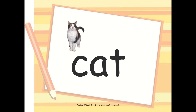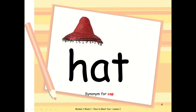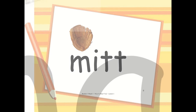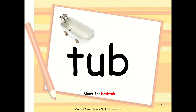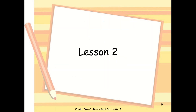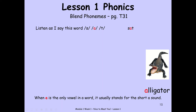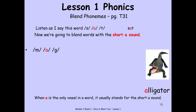For Lesson 1, you click on one and you're going to see the picture cards that come with the unit. Then this is where I start with my phonics. Listen as I say this word: s-a-t, sat. I have a hint here that teaches the kids that when the A is the only vowel in the word, it usually stands for a short vowel sound. So now we're going to segment and blend — m-a-g: mag; a-t: at; t-a-n: tan.